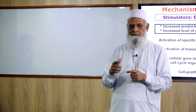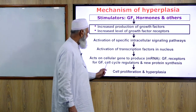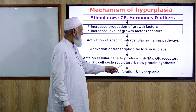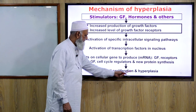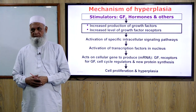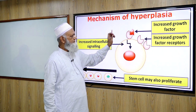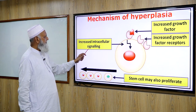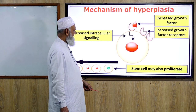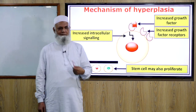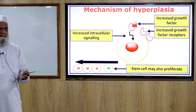Activated transcription factors produce growth factors and receptors for growth factors, cell cycle regulators, and new protein synthesis. The growth factor binds to the receptor, increases intracellular signaling, signals travel to the nucleus, and cause production of growth factors, growth factor receptors, and new proteins, leading to hyperplasia.